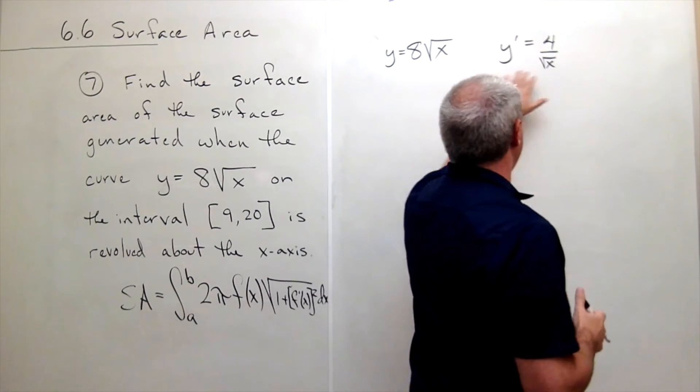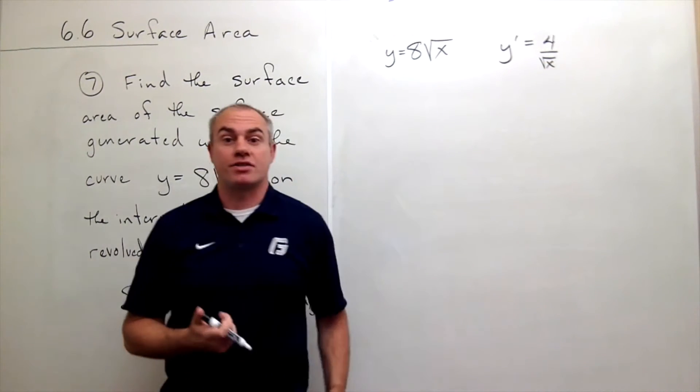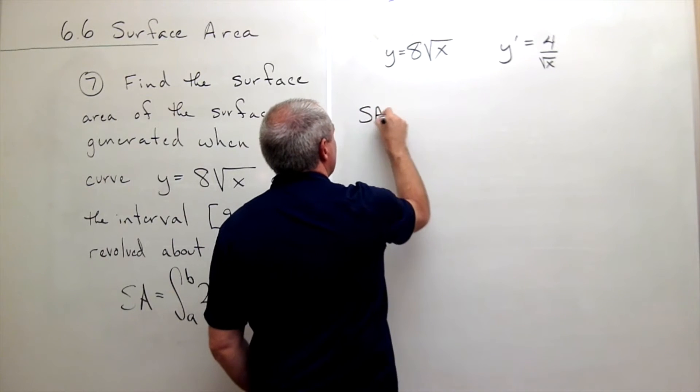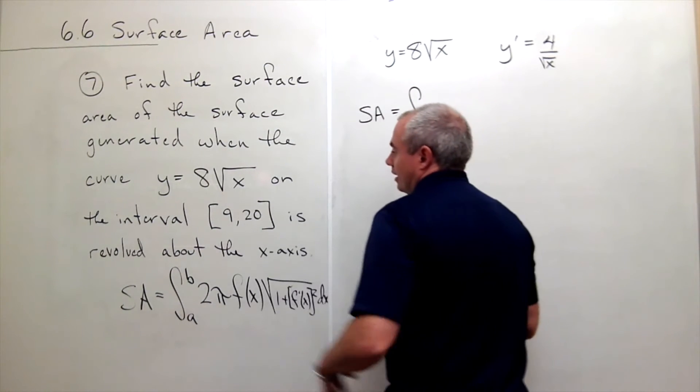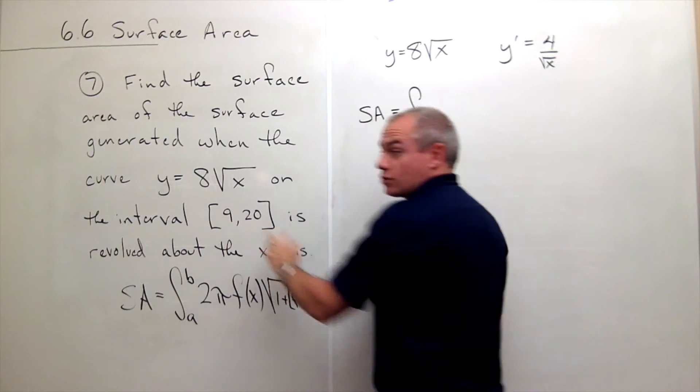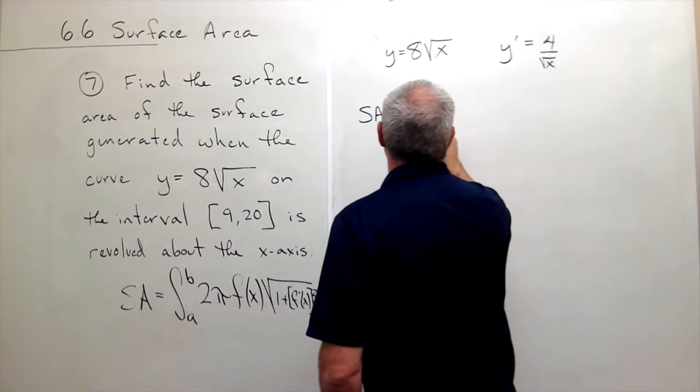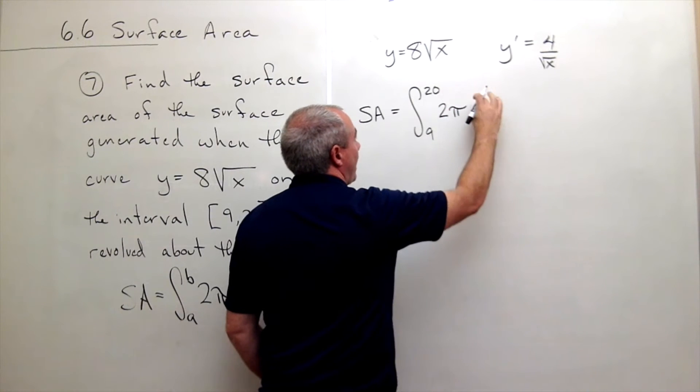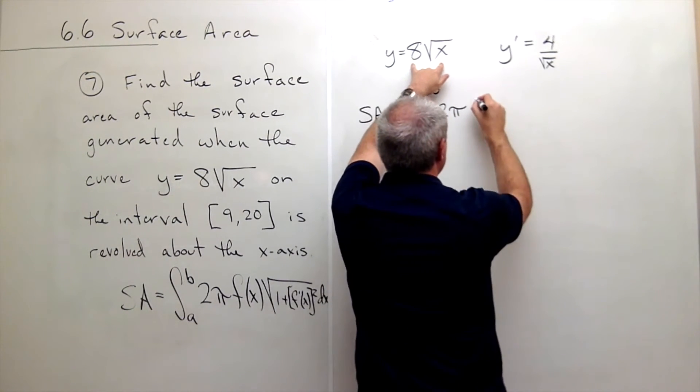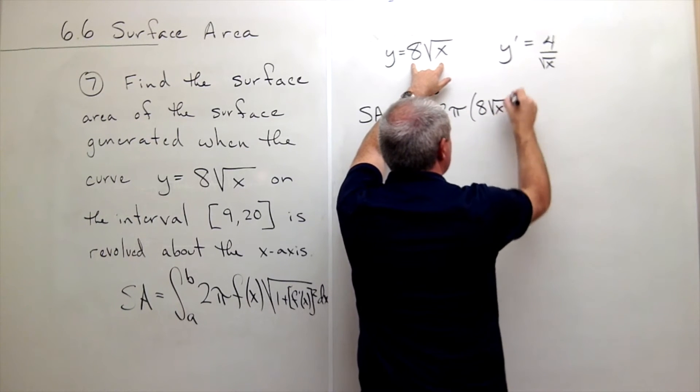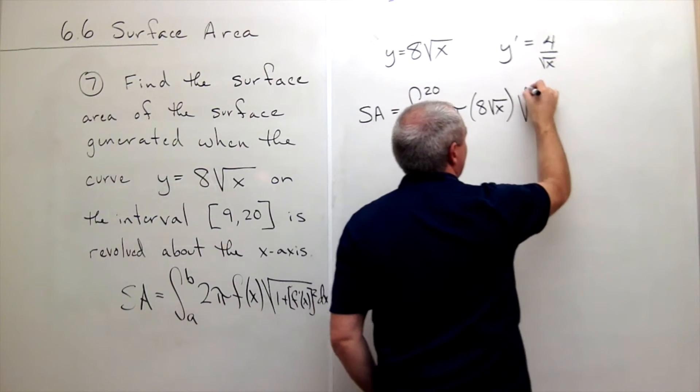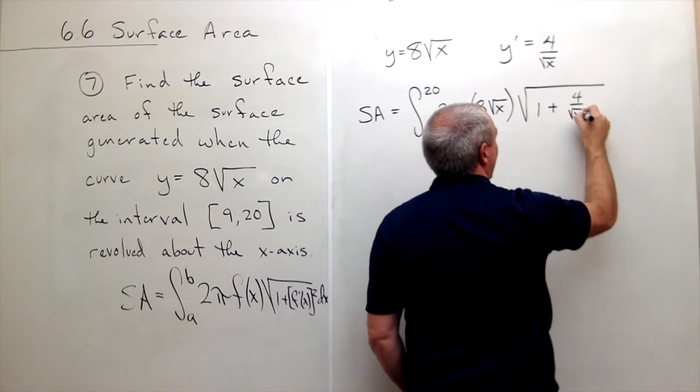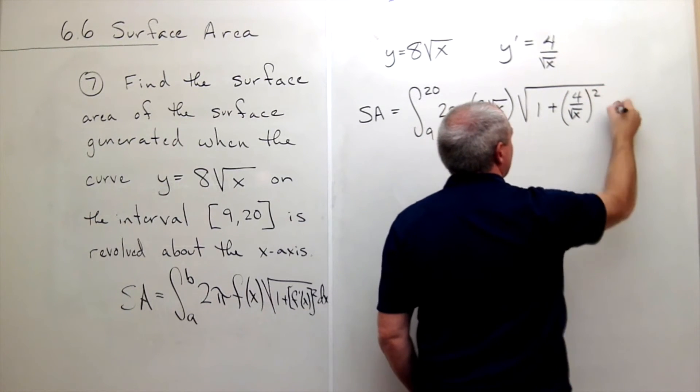So I've got my function, I've got my derivative function. Now I'm ready to start plugging things into my formula for surface area. Surface area is equal to the integral from a to b, and we're given the a and b in this case, 9 to 20. So we want to take the integral from 9 to 20 of 2π f(x). Well f(x) in this case is 8 times the square root of x times the square root of 1 plus the derivative which is 4 over the square root of x quantity squared dx.